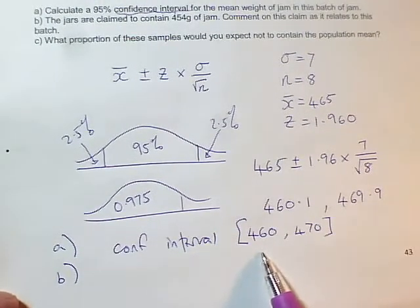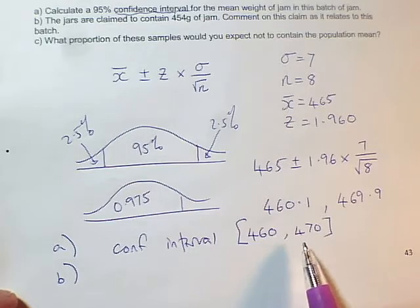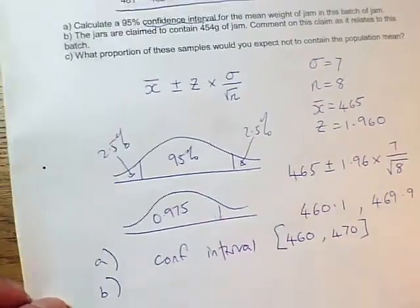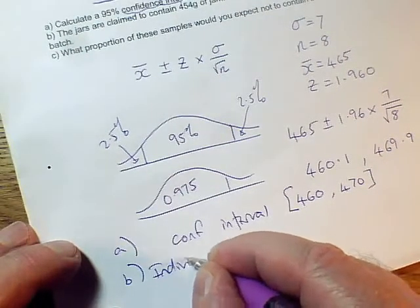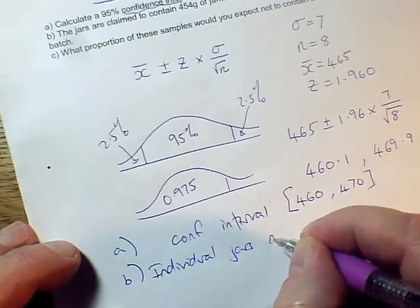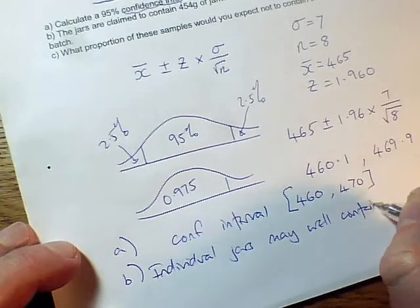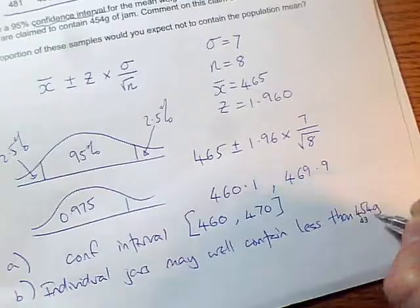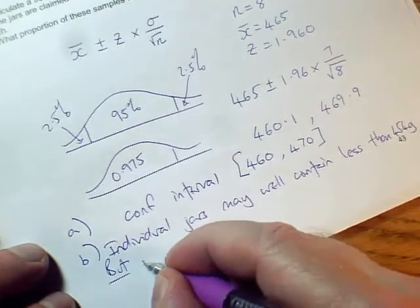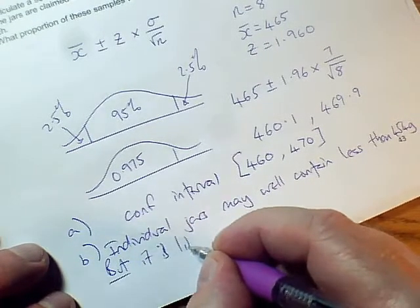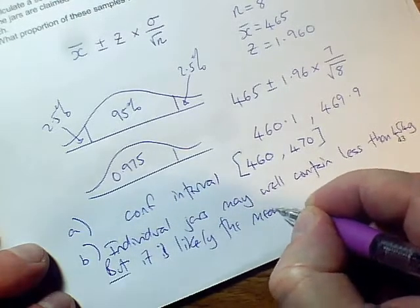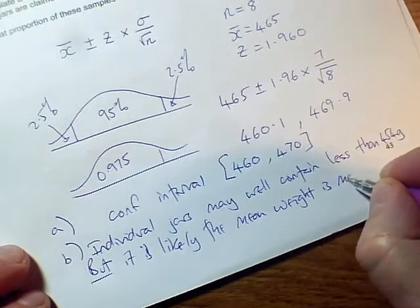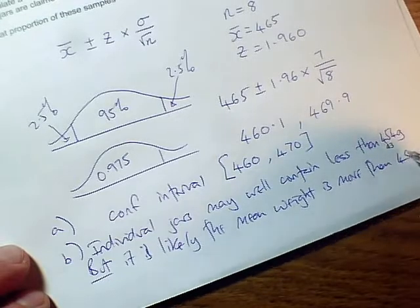But if I look at my confidence interval, I'm pretty sure, I'm 95% confident that the mean weight of jam is between 460 and 470. So firstly, individual jars may well contain less than 454 grams. But it is likely the mean weight is more than 454 grams.